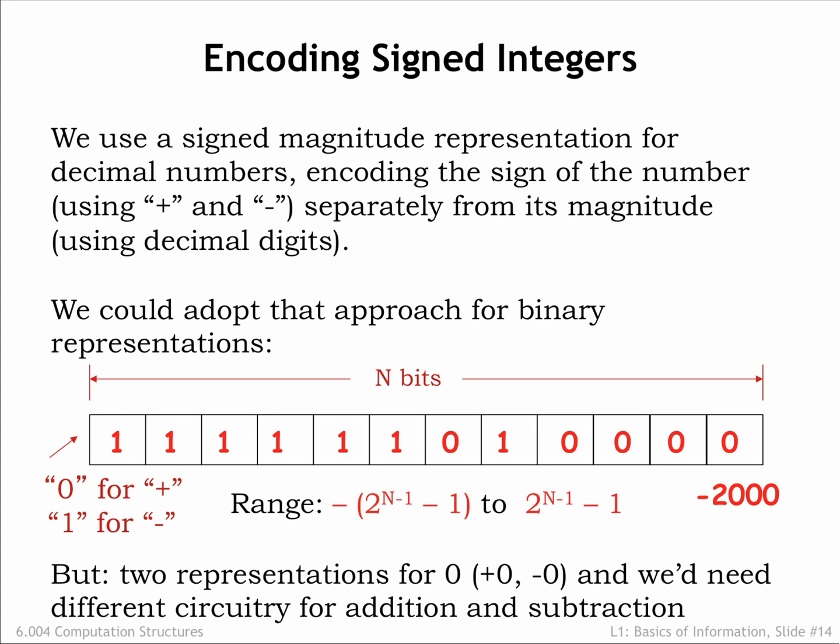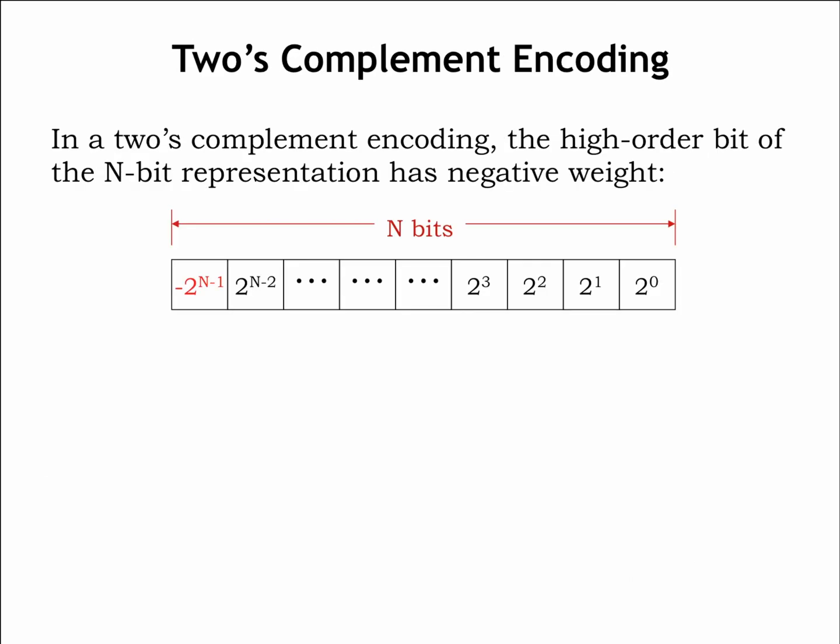Of course, we're used to that. In elementary school, we learned one technique for addition and another for subtraction. To keep the circuitry simple, most modern digital systems use the 2's complement binary representation for signed numbers.